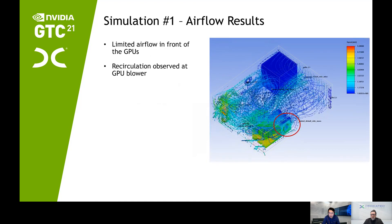The next slide shows the airflow in the system. We see that there is very limited airflow in front of the GPU because those three GPUs are so close to each other. There is very limited gap and space between the GPUs to allow air to get into the GPU blowers. We also see a recirculation in front of the GPU heatsink because the GPU blower tried to get air into the blower, but there is not enough fresh air in front of the GPU. It actually gets hot air from the exhaust, which recirculates back to the GPU and makes it even hotter.